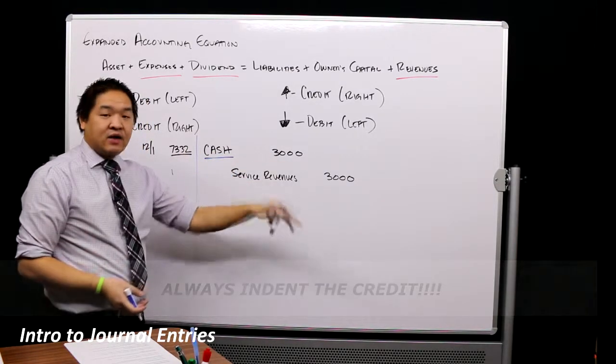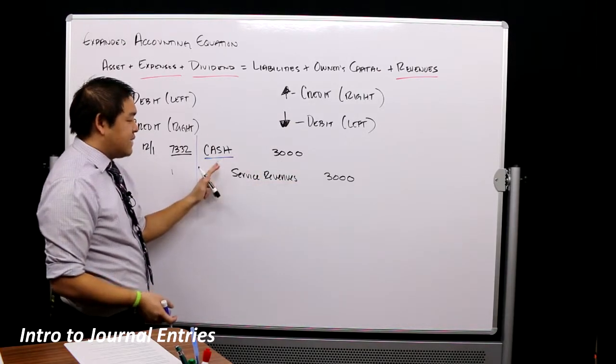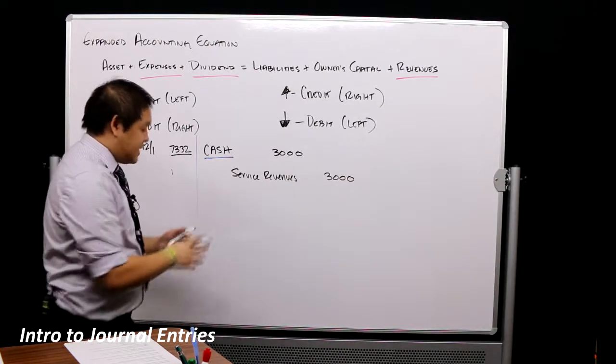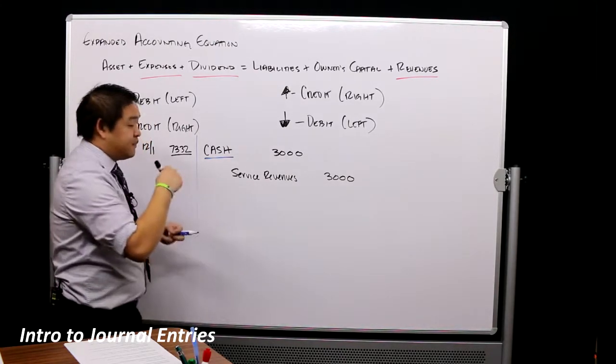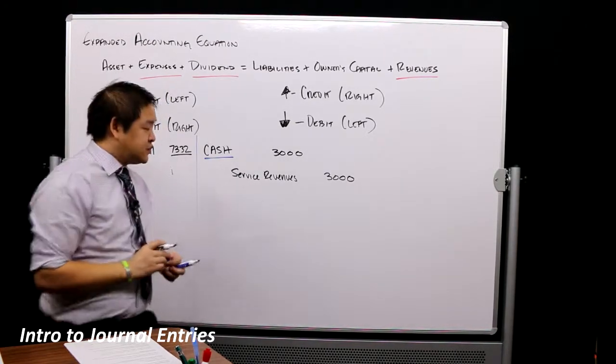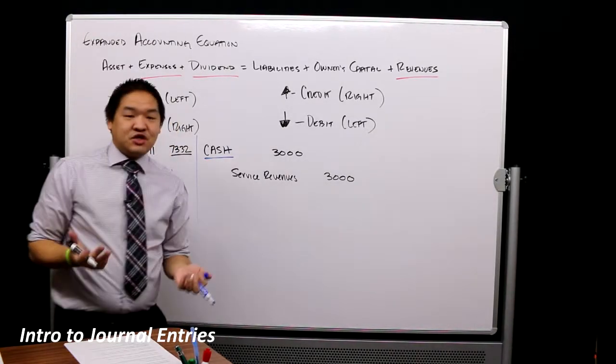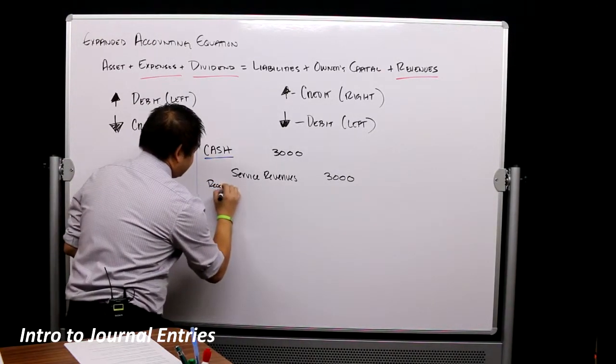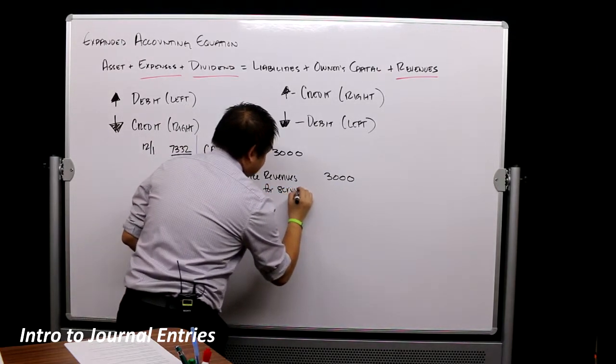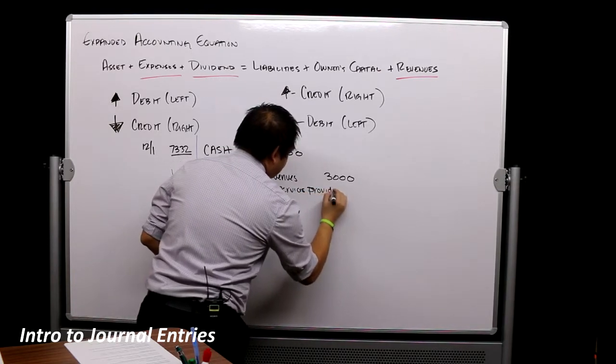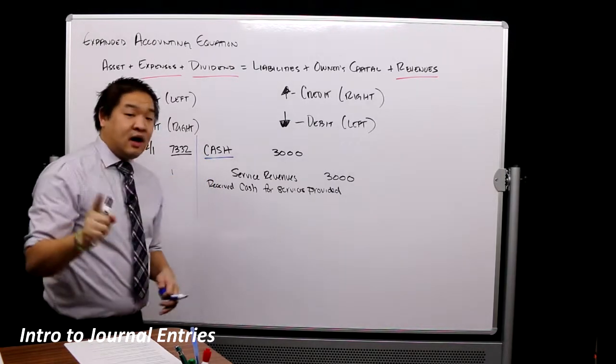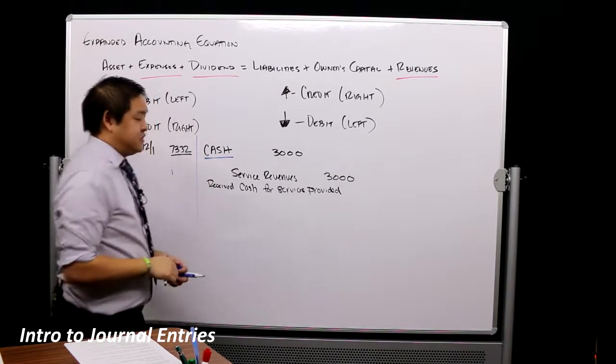The amounts, same thing. They're staggered. They're indented. So we know for a fact that this is debited because it's on the left side. We know this is credited because it's on the right side. And then typically at the bottom here, we'll put a description. Now I tell my students that we put a description that is in layman's terms. So, received cash for services provided. A non-accountant doesn't know what this means. A non-accountant does know what this means.